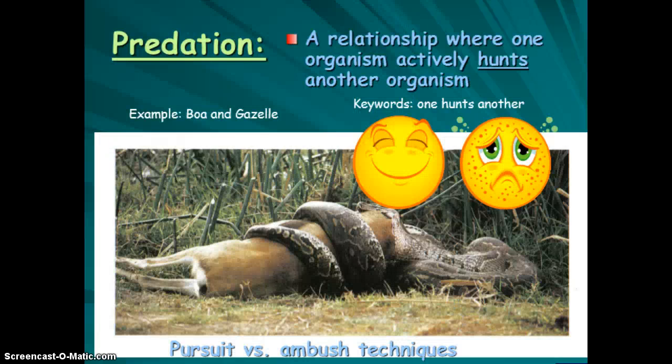Another symbiotic relationship is predation, where one organism is actively hunting the other — good for one, bad for the other. This is a trophic relationship. There are two major techniques predators use: pursuit, where they actively track their prey, and ambush, where they hide and wait for prey to appear.